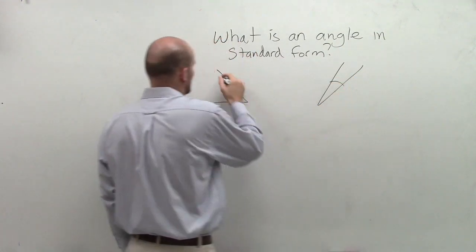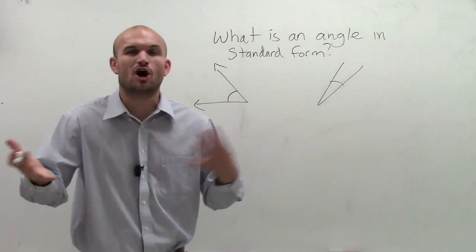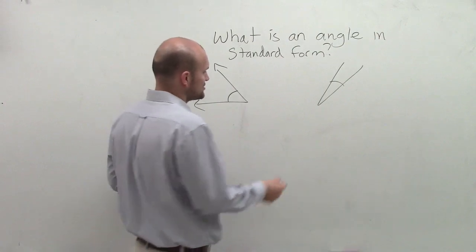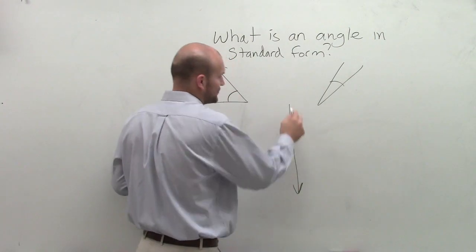You could have obtuse, acute, you could have straight, and they can all be in all different shapes, sizes, and directions. So we needed to come up with a standard form of an angle.